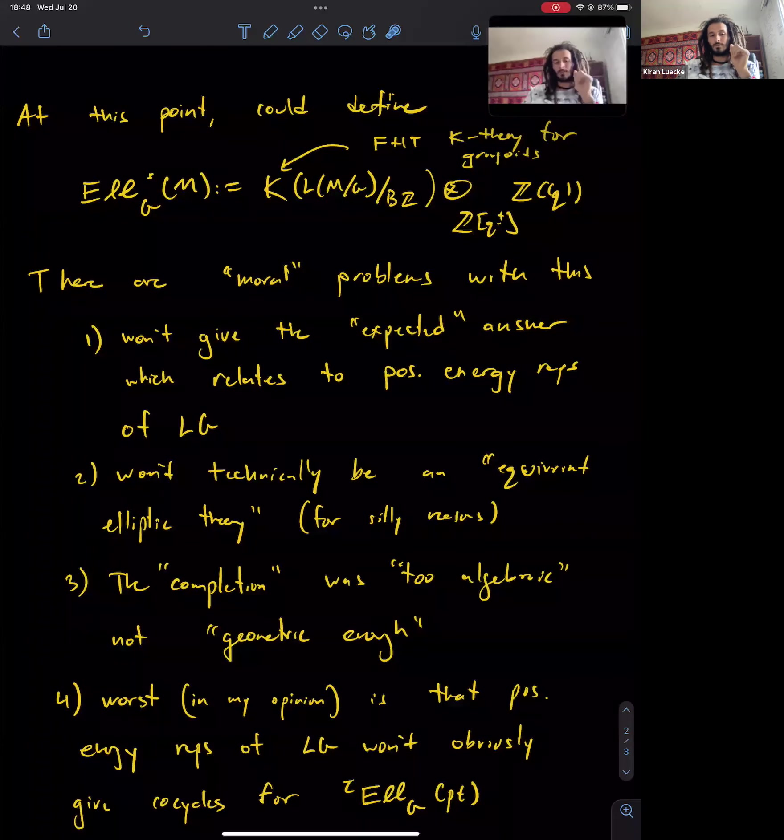This K-theory is a twisted K-theory by FHT. In the Freed-Hopkins-Teleman formulation, you can absorb the twist into the groupoid, and everything in my talk will be implicitly twisted or at least twistable. The first problem is that this won't match up with the expected outcome—it won't match with what Grojnowski did even when you complexify, because you'll get a representation ring of the loop group but at the wrong level. The second problem is that there is an existing definition of equivariant elliptic cohomology due to Mike Hopkins, and the naive version won't satisfy it.